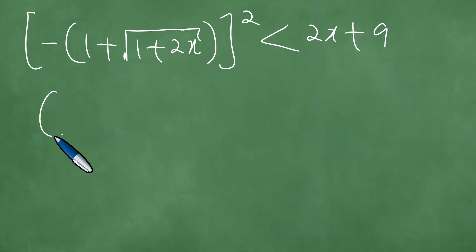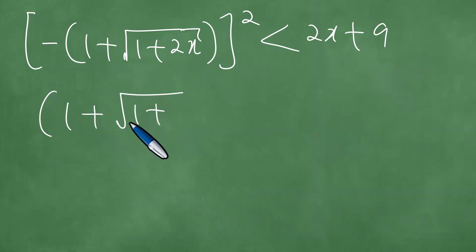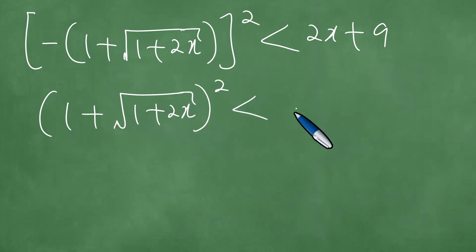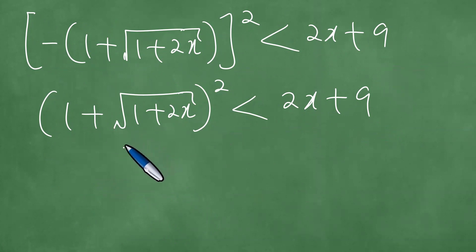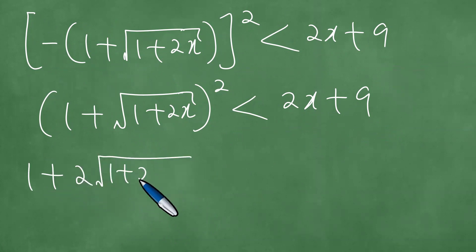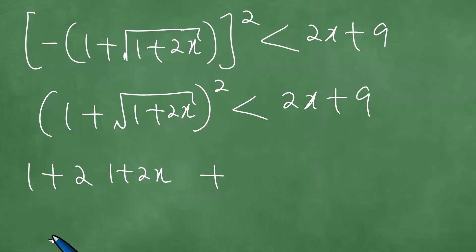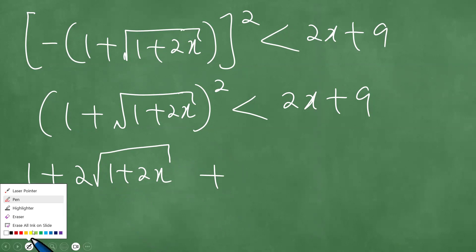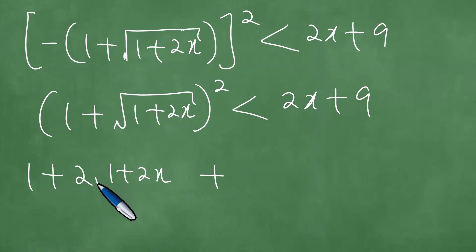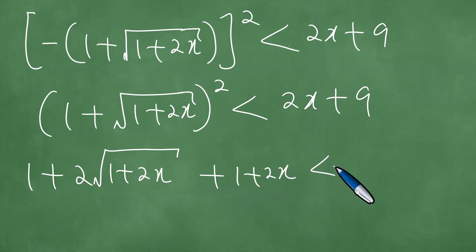We square the expression 1 plus the square root of 1 plus 2x, squared, and this is less than 2x plus 9. We perform the square on the left side, getting 1 plus 2 times the square root of 1 plus 2x, plus 1 plus 2x, which is less than 2x plus 9.